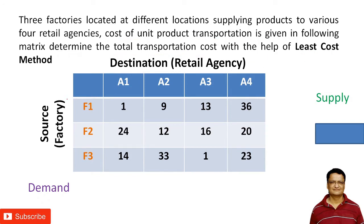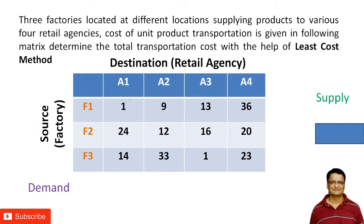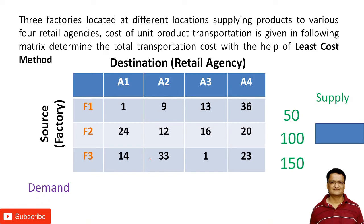There are three factories F1, F2, F3 which are supplying products to four retail agencies A1, A2, A3, A4. The cost of transporting one product from F1 to A1 is 1, from F1 to A2 is 9, and so on. F1 can produce 50 products, F2 can supply 100, and F3 can supply 150 — these are the supply values.